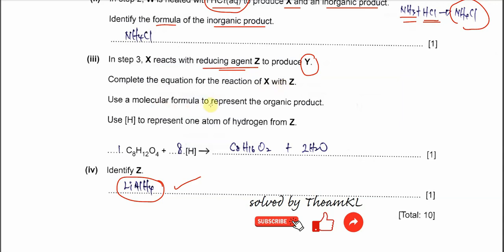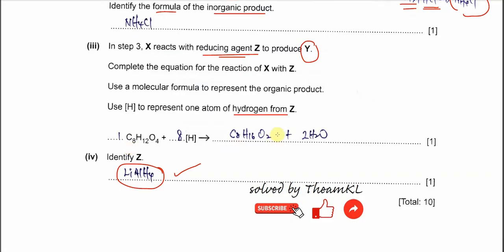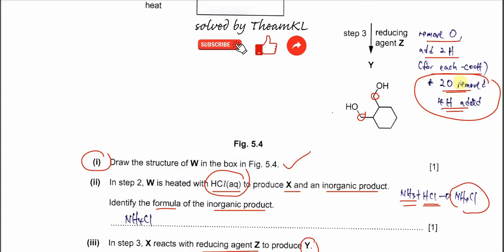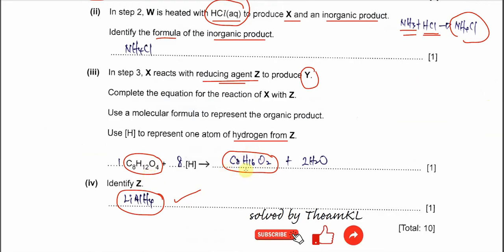So you can use the molecule formula to represent the organic product. And use the H with this square bracket to represent one atom of hydrogen from Z. So first you need to identify the products that form here. So it started from this dicarboxylic acid. This one. So as I told you, it will remove two oxygen and add four hydrogen. So means the products, organic products here, you just need to put this one. Okay, carbons remain same, eight carbons.